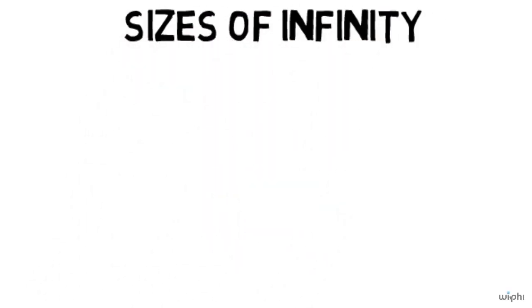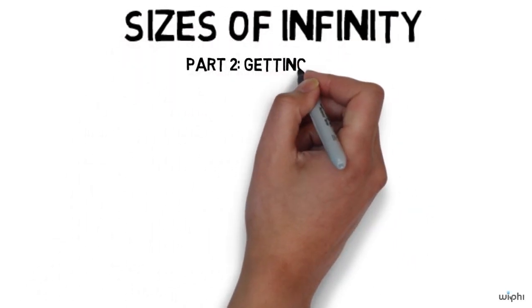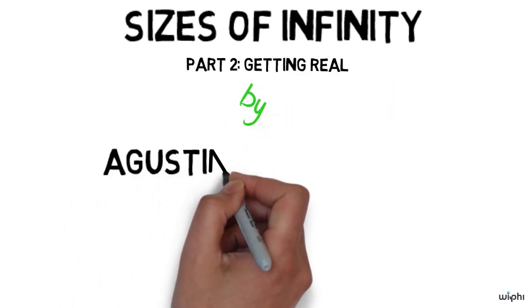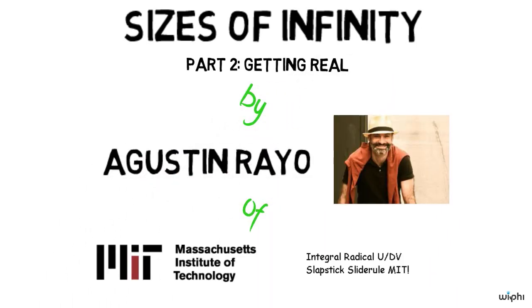Hi, I'm Agustin Rayo. I'm an associate professor of philosophy at MIT, and today I want to talk about how there are some infinities that are bigger than others.